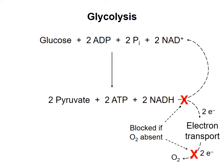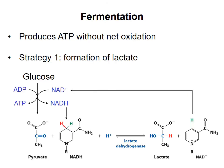Certain cell types, such as skeletal muscle cells and some microorganisms, have developed mechanisms to regenerate NAD+ even in anaerobic conditions, when no molecular oxygen is present. A pathway that uses a starting material to make ATP without net oxidation is called a fermentation. In one type of fermentation used in muscle cells, glucose is converted to pyruvate, and then the pyruvate is reduced to lactate. The electrons from this reduction come from NADH produced earlier in the process, so the net amount of NAD+ in the cell does not change. But ATP has been produced.